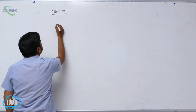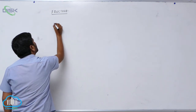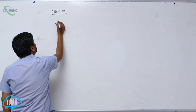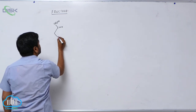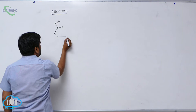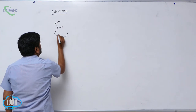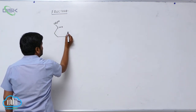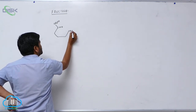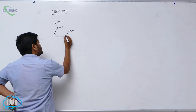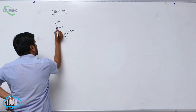Fructose also forms a cyclic structure. This is C double bond O. We erase CH2OH, and number the carbons: 2, 3, 4, 5. This is carbon 6. Now erase CH2OH and OH, then add hydrogen at positions 1, 2, 3, 4, 5.